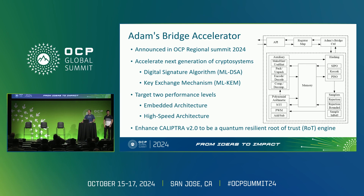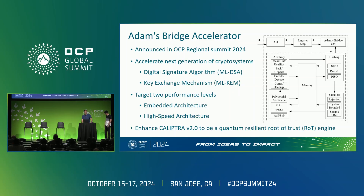Adams Bridge Accelerator was announced at the previous OCP, and it contains two PQC algorithms for digital signature and key exchange. The current version contains Dilithium MLDSA-87, and we have a plan to implement Kyber as part of the Adams Bridge project. We target two different performance levels for this accelerator: an embedded architecture and a high-speed design.